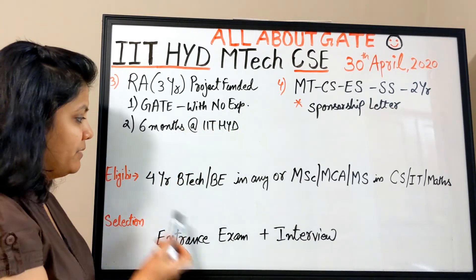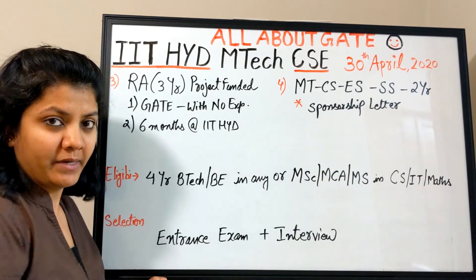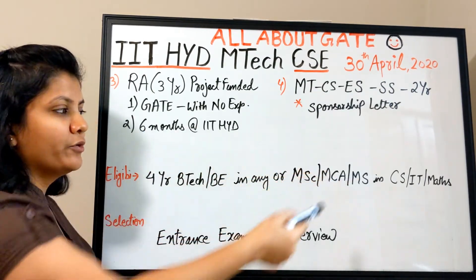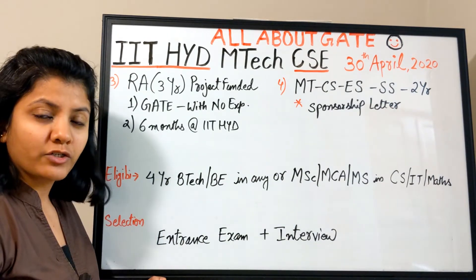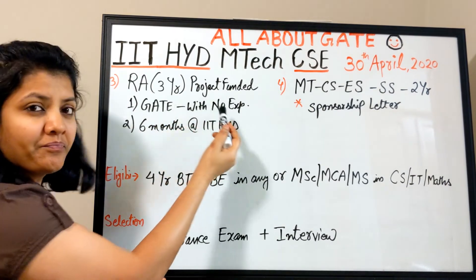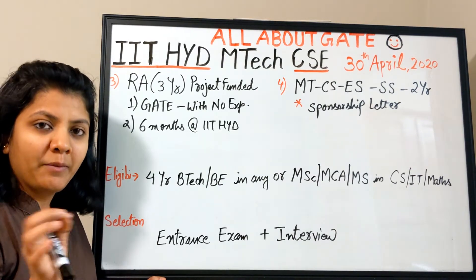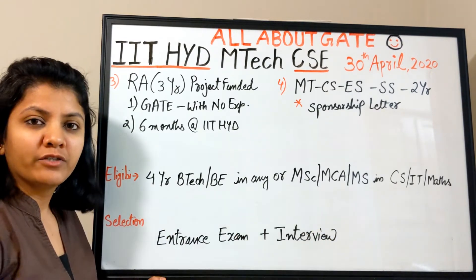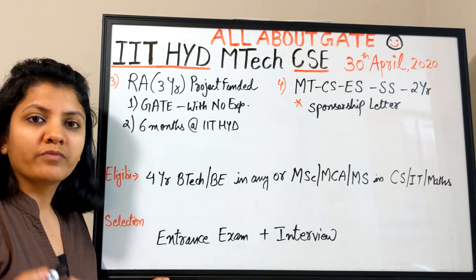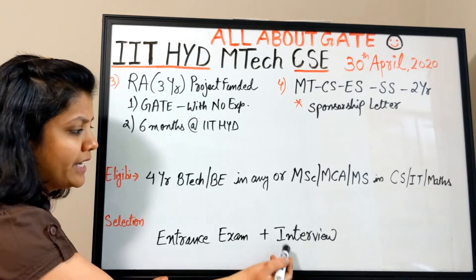For all these programs there must be a four-year BTech or BE, or MSc, MCA, or MS in CS, IT, and mathematics. The category requiring six months at IIT Hyderabad also includes statistics, mathematics, and electronics backgrounds, and gate is not required for that specific sub-option. For all non-MHRD programs, there is an entrance exam followed by an interview, based on computer science undergraduate-level topics similar to those in the GATE exam.